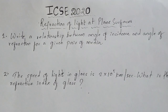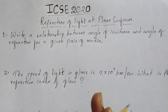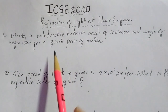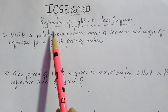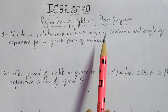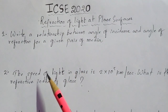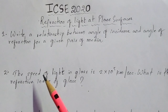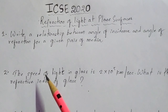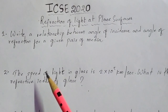Hi guys, this is Barsha and you are watching Mastermind. As you have already seen in the title of this video, in this session we are going to discuss the important questions from physics from the chapter Refraction of Light at Plane Surfaces. All these questions are important for your ICSE 2020 Board Examinations and are the type of questions which are mostly repeated every year from this chapter. So let us begin.